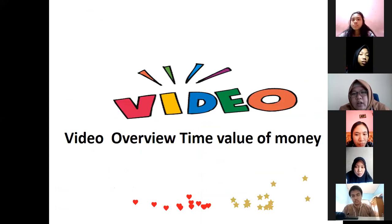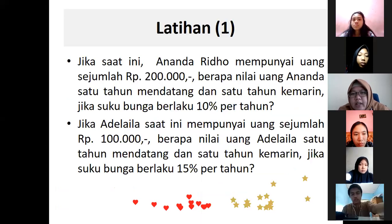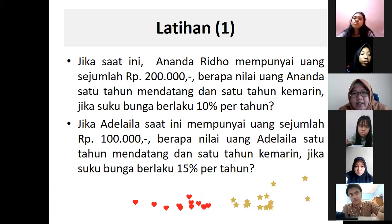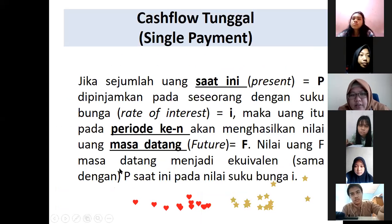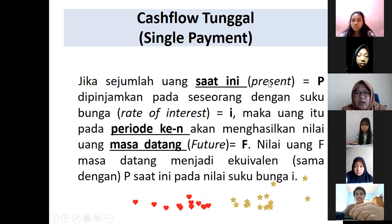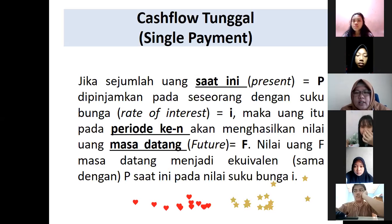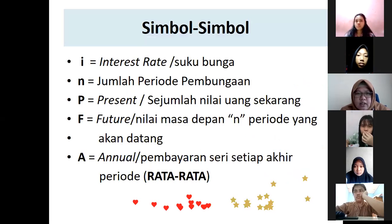Ini video over time, udah kalian tengok sendiri aja. Ini latihannya udah dikerjakan. Sudah. Nanti kalau quiz tiba-tiba udah bisa lah ya. Contohnya kan udah jelas. Jadi ini harus kalian ingat ya. Kalau present itu P, present yang saat ini itu P. Rate of interest itu I. N itu waktu, boleh tahun, boleh bulan. Terus F itu future. Ini selalu kalian ingat, soalnya kan pakai ini terus. Kalau bisa kalian catat di buku biar kalian nggak bingung-bingung.